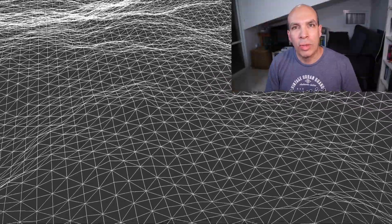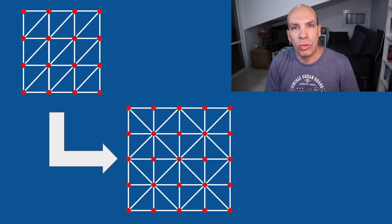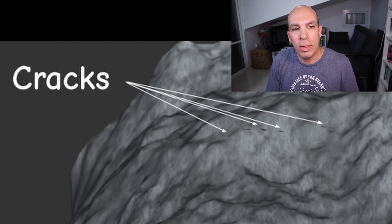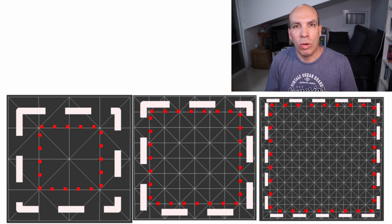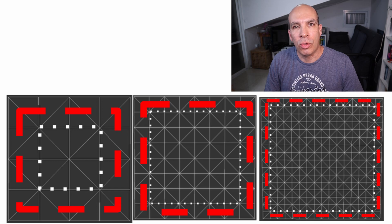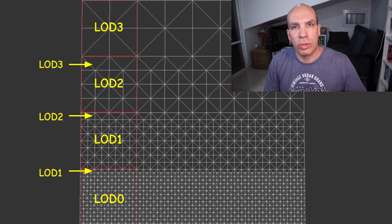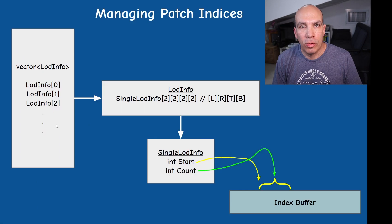The first video was an overview of the algorithm and we talked about the change from a simple grid of triangles to a triangle fan. In the second video we saw a solution to the problem of cracks in the terrain by maintaining all the possible permutations between the core of the patch and the ring, which is the outer strip of triangles. The crack problem is relevant only to the ring and not to the core, so we need to select the correct combination between the LOD of the core and the LOD of the ring on all four sides.